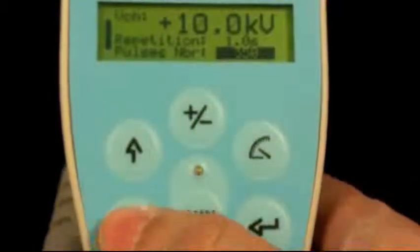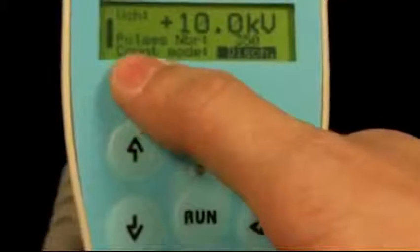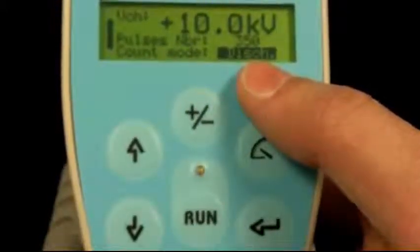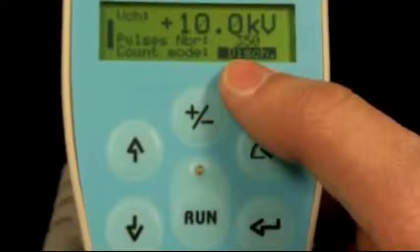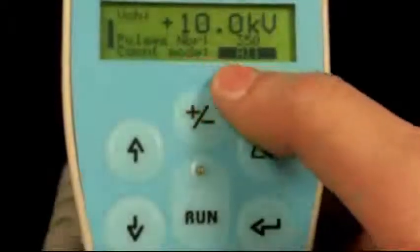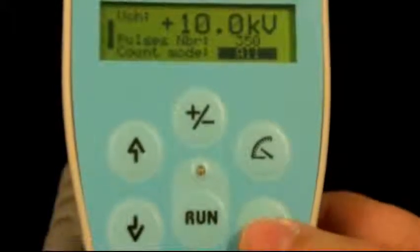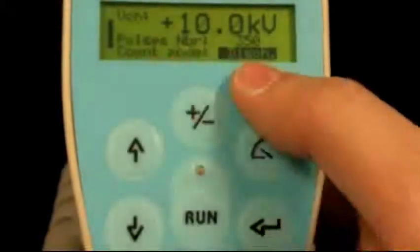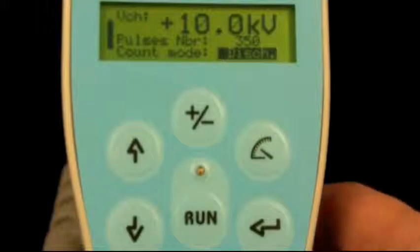Now if you arrow down, there's more selections. You have count mode, discharge, meaning that it will only count when the module discharges. If you hit enter, the other option is all, meaning if the gun discharges or not, it will count it as a pulse. Hit enter again and it goes back to discharge, meaning it will only count when the module actually discharges.